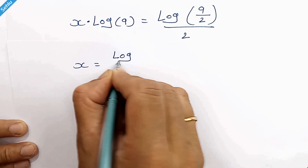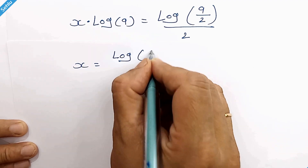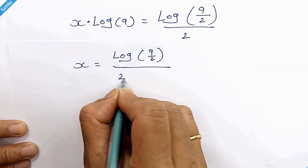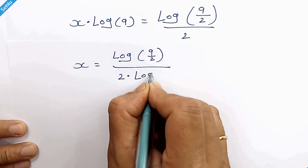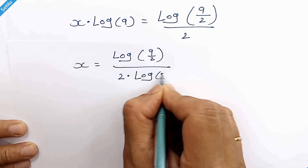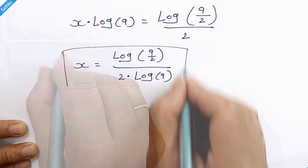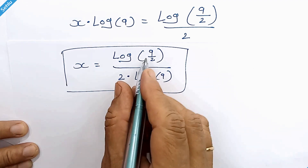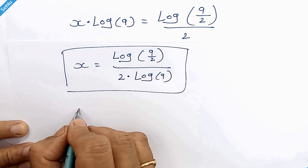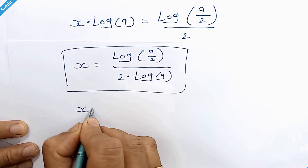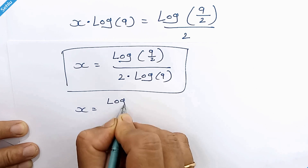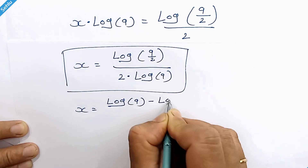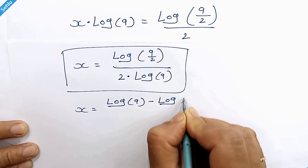We can isolate x by moving log of 9 to the right-hand side, so x is equal to log of 9 over 2, divided by 2 times log of 9. This is the answer. If we simplify further, this can be written as x is equal to log of 9 minus log of 2, over 2 times log of 9.